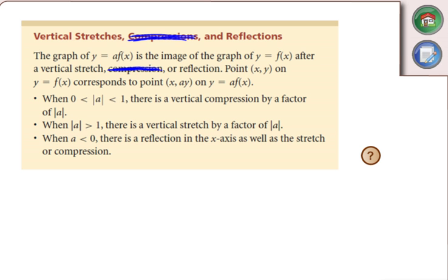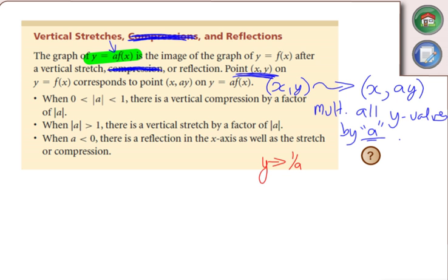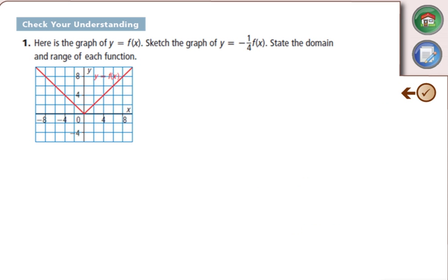When we look at vertical stretches, we start with an 'a' outside — a·f(x). Any general point (x, y) maps to (x, a·y). What we're doing is multiplying all y-values by that value of a. The replacement into the equation is: y is replaced with (1/a)·y, giving us (1/a)·y equals f(x), then we bring it in front.